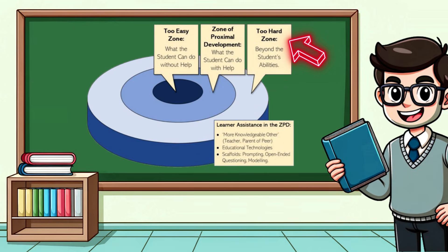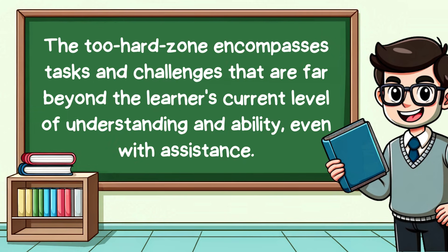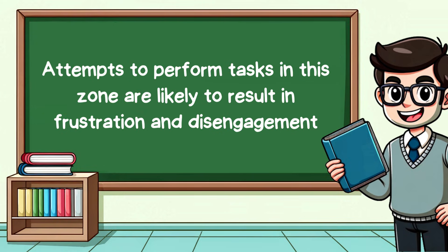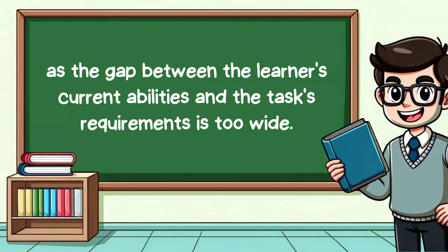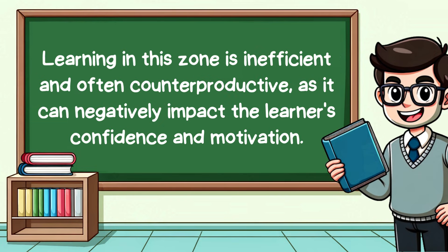If we zoom out to the third zone, we can call this the Too Hard Zone. This zone encompasses tasks and challenges that are far beyond the learner's current level of understanding and ability, even with assistance. Attempts to perform tasks in this zone are likely to result in frustration and disengagement, as the gap between the learner's current abilities and the task's requirements is too wide. Learning in this zone is inefficient and often counterproductive, as it can negatively impact the learner's confidence and motivation.